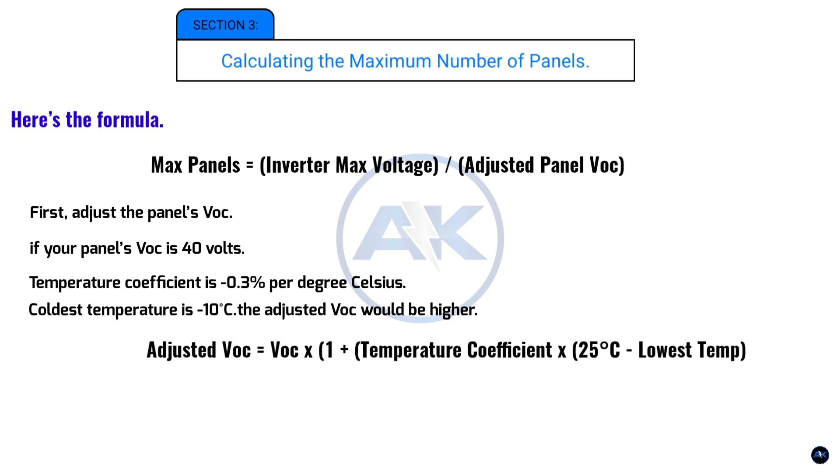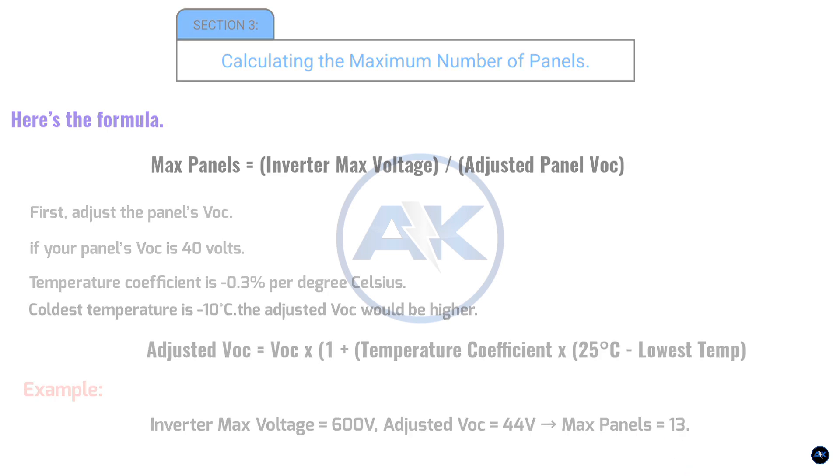Once you have the adjusted VOC, divide your inverter's maximum input voltage by the adjusted VOC. That will give you the maximum number of panels you can connect in a string. Example, inverter max voltage equals 600 volts, adjusted VOC equals 44 volts, max panels equals 13.